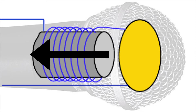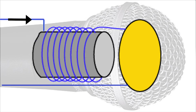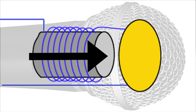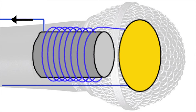As the coil moves down, electrons flow one way, and as the coil moves back upward, the electrons flow the other way. This alternating current can be amplified and fed into a speaker, which will replicate the sound from the source.